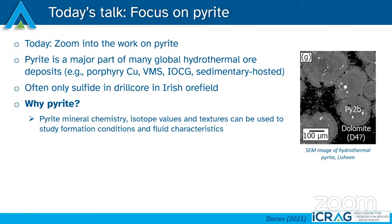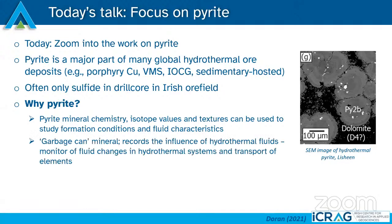Pyrite mineral chemistry has been used in many other deposits — in particular SEDEX and VMS — including isotope values and textures to study formation conditions and fluid characteristics. A term I learned many years ago which I think is quite accurate is the 'garbage can mineral,' which relates to the fact that pyrite absorbs a lot of the trace element compositions of the hydrothermal fluid passing through it. So it's a recorder of hydrothermal fluid influence and can be used to monitor changes in fluid composition. There are really two types of people when it comes to pyrite — those who think it's great, and those who think it's useless.